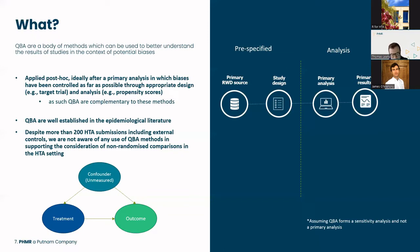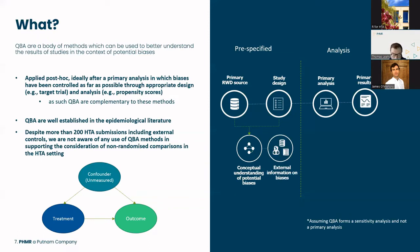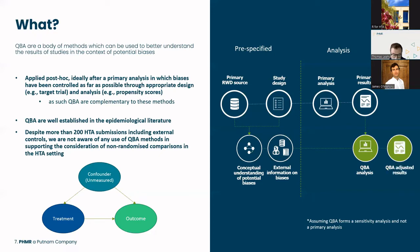To understand where QBA might fit into the comparative evidence generation workflow: assuming we have the usual setup with a primary data source and pre-specified study design, then a primary analysis and corresponding results, an assessment of potential biases should be completed before any analyses. An additional step is to search for external sources of information that could inform the parameterisation of the QBA methods. Once parameterised, we conduct a QBA analysis on the primary results, which gives us adjusted results for the hypothetical unmeasured confounder.